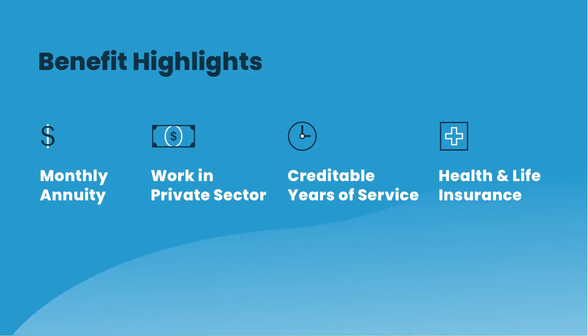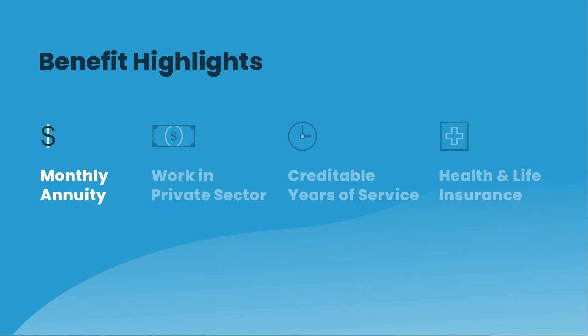Speaking of federal disability retirement, I want to focus on the benefit highlights. The federal disability retirement benefit has four main components: monthly annuity, the ability to work in the private sector, creditable years of service, and health and life insurance options. For today's webinar, I really want to focus your attention on the monthly annuity from this benefit, and how other benefits pertain to it, potentially offsetting or interacting with it.